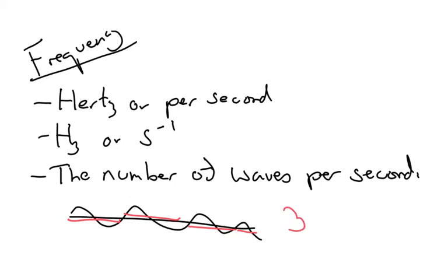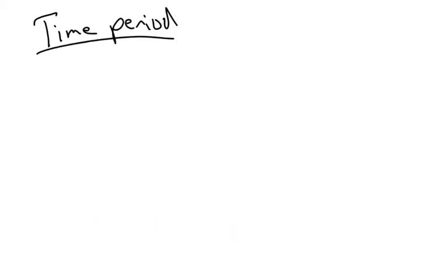Now time period, it's often given the symbol T. Its units are seconds, and it's defined as the time for one wave.